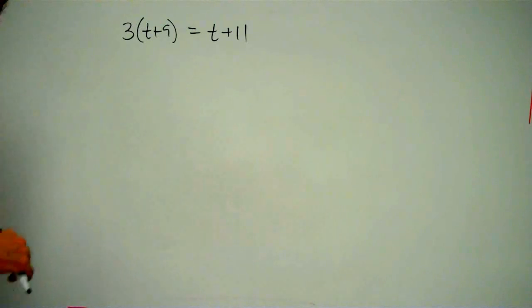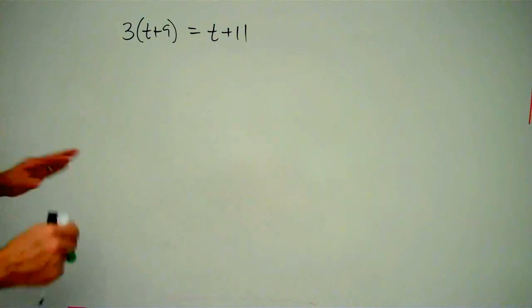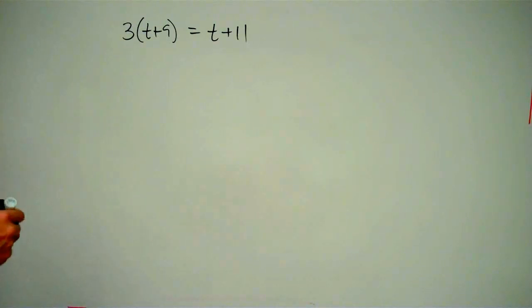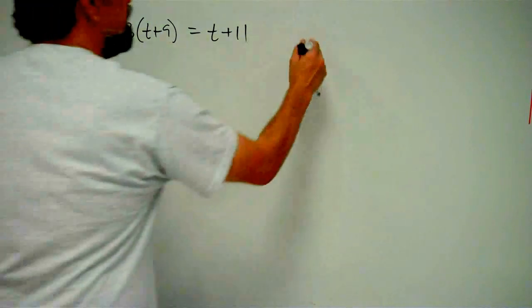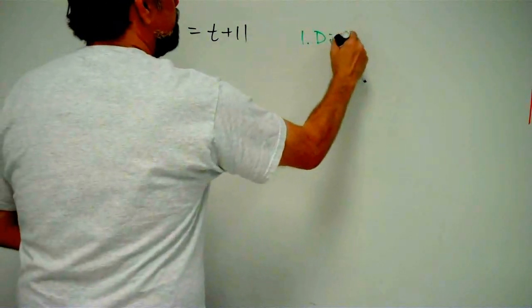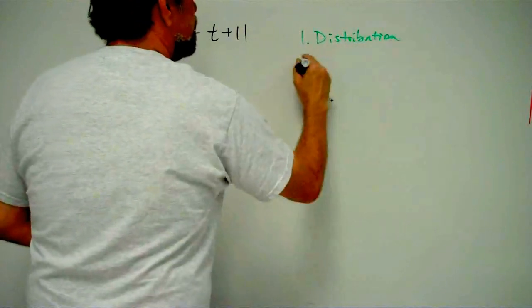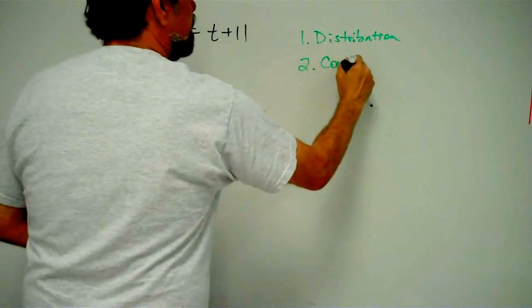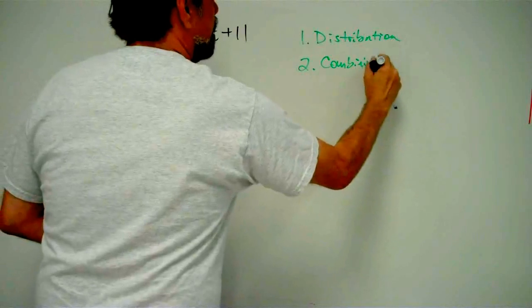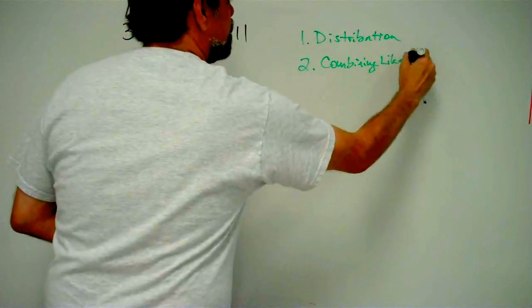Well, remember, there's two steps that we use a lot in solving these linear equations. That is distribution, and the other one is combining like terms.